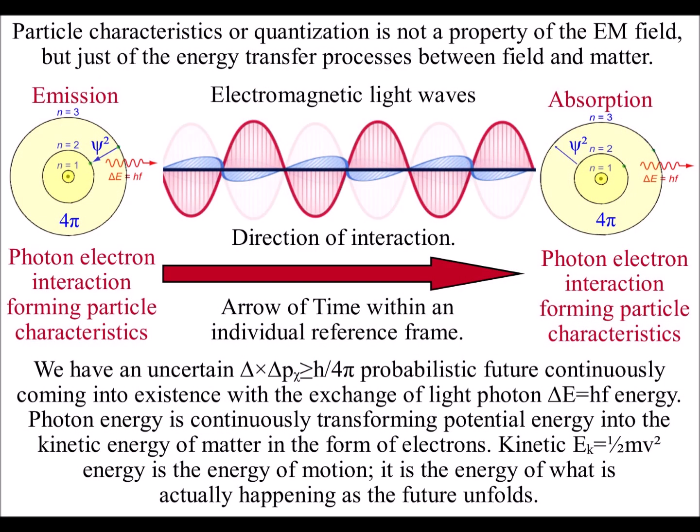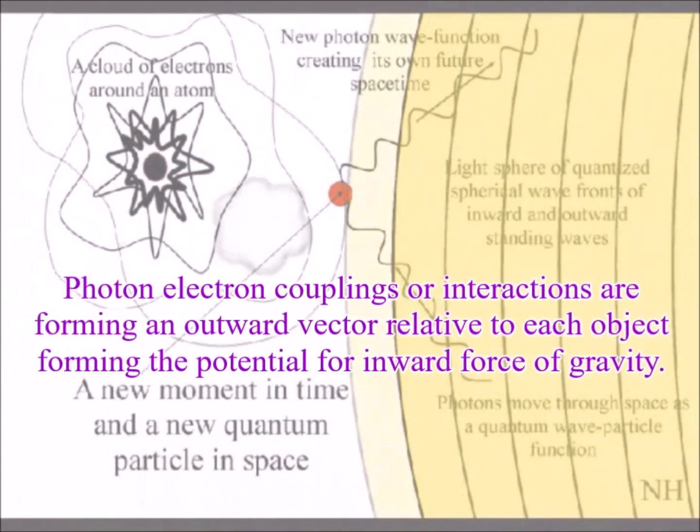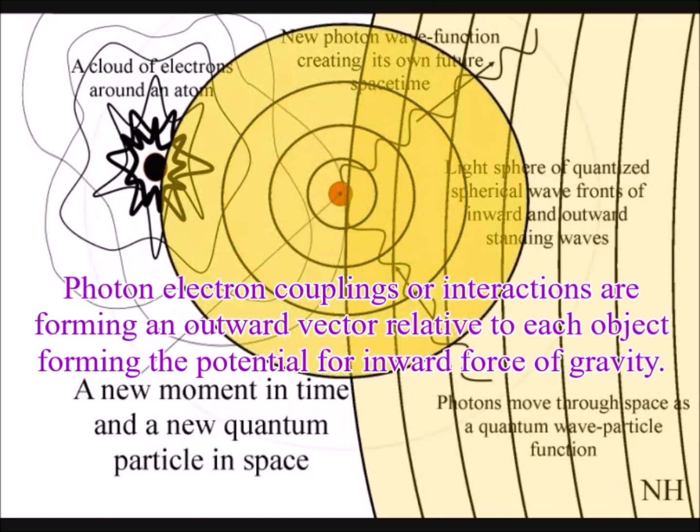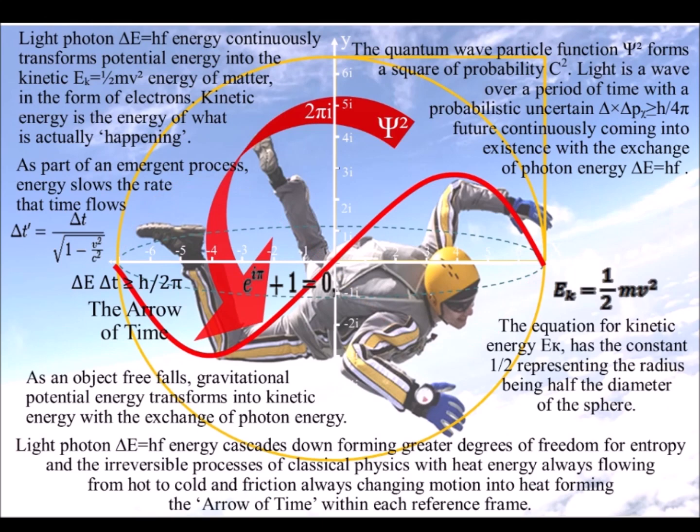This idea is very similar to the electromagnetic field, which involves the exchange of photon energy. The photon represents the particle nature of light within electromagnetic fields, just as the graviton represents the particle nature of gravity within gravitational fields.